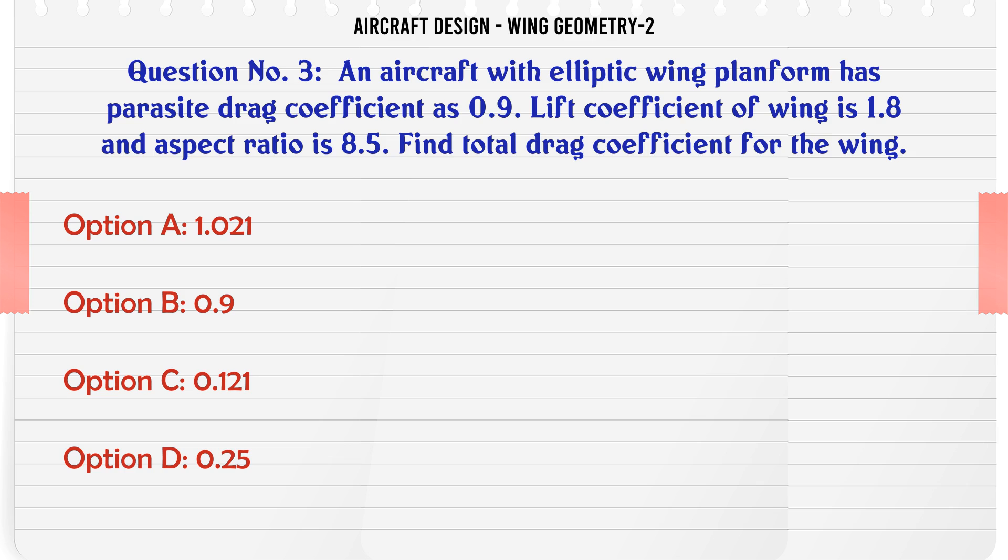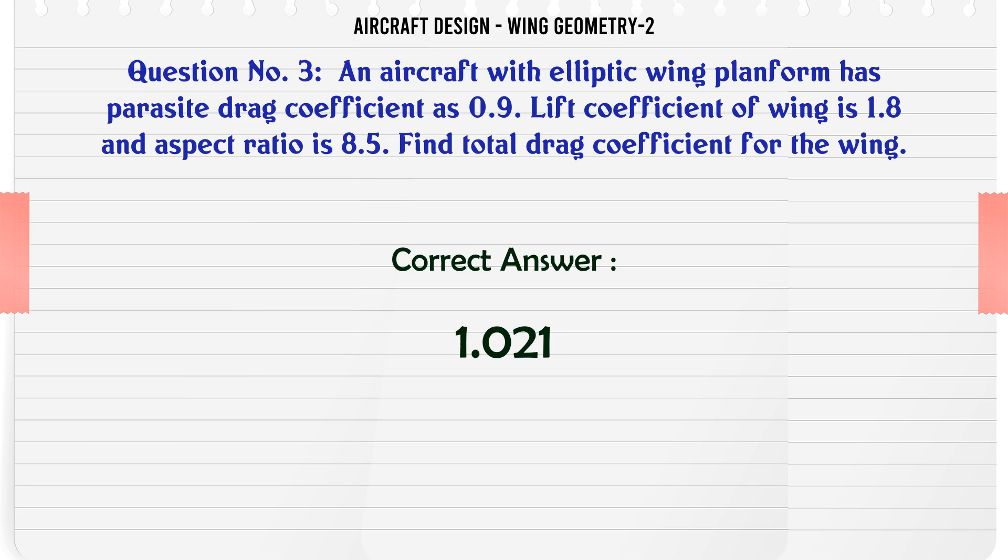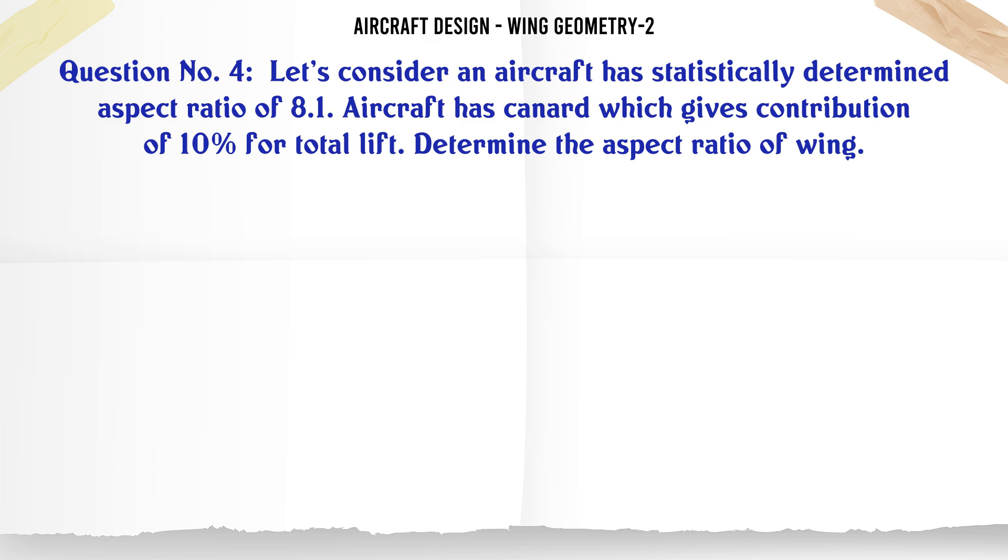A: 1.021, B: 0.9, C: 0.121, D: 0.25. The correct answer is 1.021. Let's consider an aircraft has statistically determined aspect ratio of 8.1.